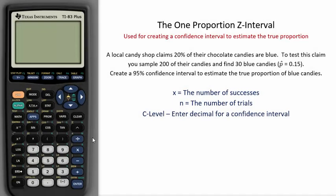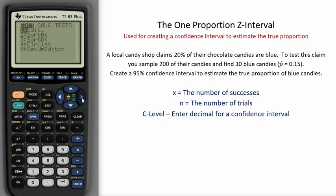The One Proportion Z Interval is used for creating a confidence interval to estimate the true proportion. To find it on the TI Calculator, go to STAT, over to TESTS, and then down to One Prop Z Interval.